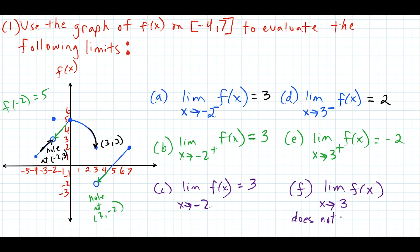The limit is heading to two different places on either side. Anytime you have a jump in the graph, the limit is automatically not going to exist.